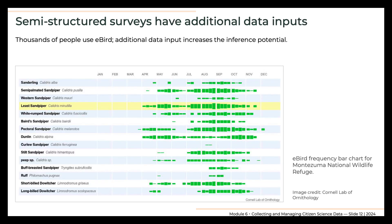eBird is an example of a semi-structured survey that allows open participation and observer-selected sites. Tens of thousands of individuals keep track of their bird sightings with eBird, and many agencies use eBird to document bird populations in their parks, forests, or refuges. For example, the U.S. Fish and Wildlife Service partnered with eBird to enable data visualizations for all national wildlife refuges. As a result, anybody can visit the Explore section of the eBird website and create checklists or bar graphs for any refuge.